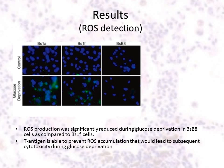To examine the importance of T antigen expression and ROS production during glucose deprivation, we used BSBH cells as well as the T antigen non-expressing clones BS1A and BS1F. We found that ROS production was significantly reduced during glucose deprivation in BSBH cells compared to BS1F cells. BSBH cells did not show an increase in ROS production during glucose deprivation, whereas there was a general increase in ROS production in BS1A cells. This suggests that T antigen is able to prevent ROS accumulation, which would otherwise lead to cytotoxicity during glucose deprivation.